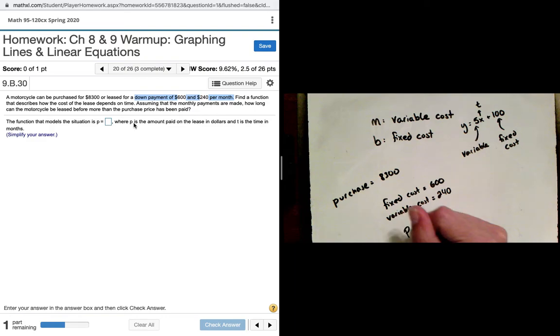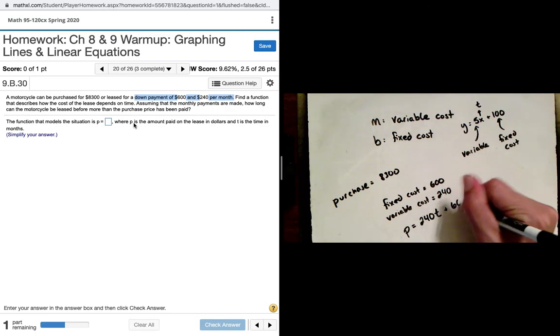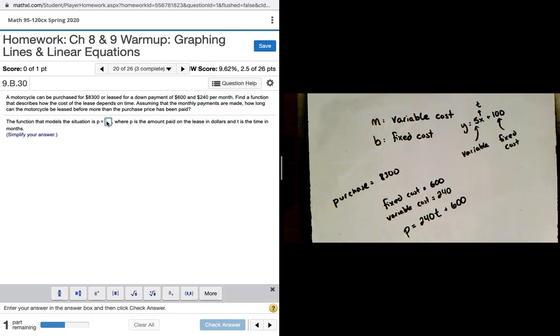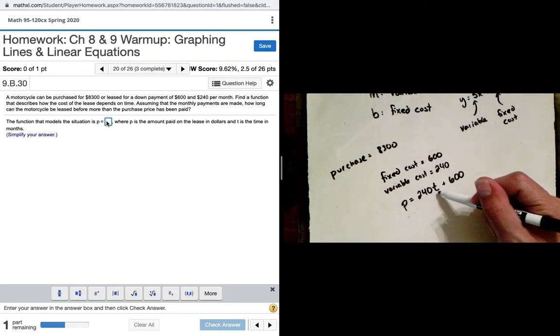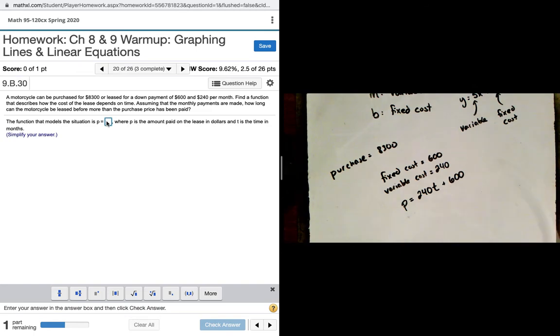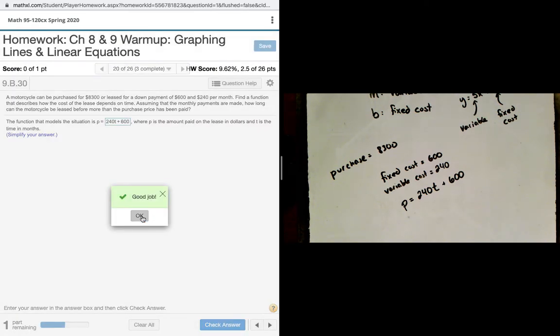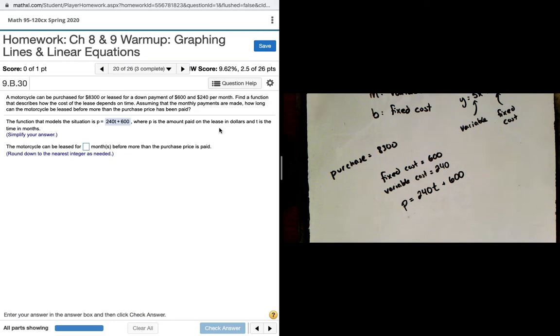So, we're going to have a P is equal to, remember the variable cost goes attached first. It's the slope, $240 T plus $600. This is our equation to find out how much we have to pay for the motorcycle. I can plug in different values of T, remember T represents month. So, I can plug in like five, for example, and it would tell me how much I have to pay after five months for this motorcycle. Then, it says how long can the motorcycle be leased before the purchase price has been paid? And so, notice it says how long. We're looking for months. Months is represented by this T value or time. So, this is what we're looking for.